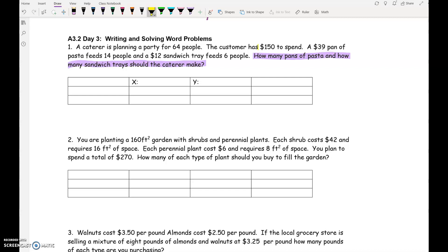So I'm going to highlight the three numbers that are about money. One of our equations is going to come from those three numbers about money. So in this first row, I'm going to write money. The other three numbers, what do they describe? People. People. 64 people, 14 people, 6 people.